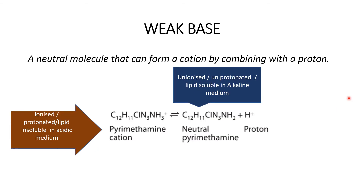What about weak bases? A weak base is a neutral molecule that can form a cation by combining with a proton. An example is pyrimethamine — it is a weak base because it combines with a proton to form a protonated, positively charged cation. So when a weak base combines with a proton it becomes ionized.